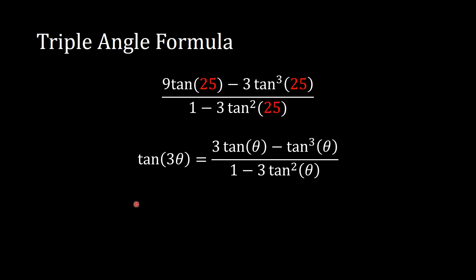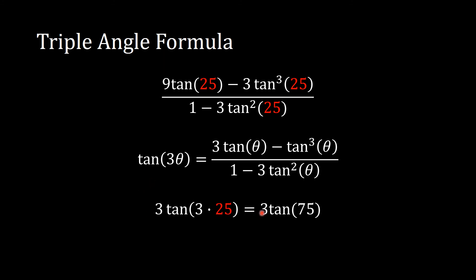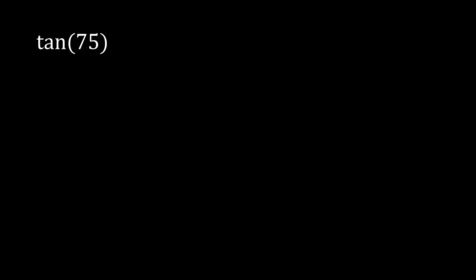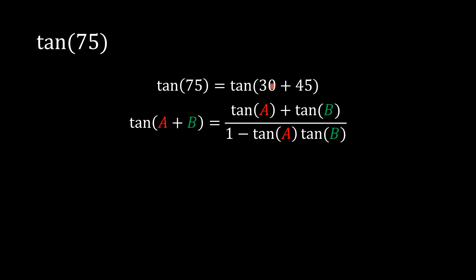Comparing our expression to the triple angle formula: the denominator matches, and the numerator is exactly 3 times the triple angle numerator. So our expression equals 3 · tan(3θ) where θ = 25°, giving us 3 · tan(75°). To find tan(75°), we use the addition formula with A = 30° and B = 45°: tan(30°) = radical 3 over 3, and tan(45°) = 1, which we write as 3 over 3 to simplify computation.